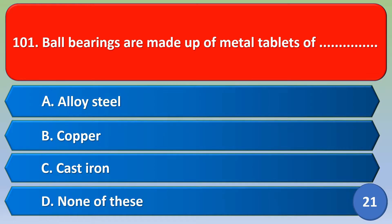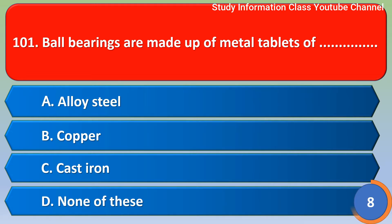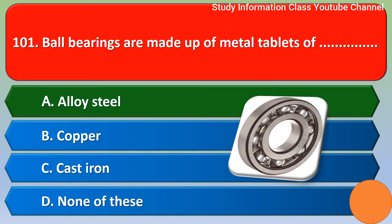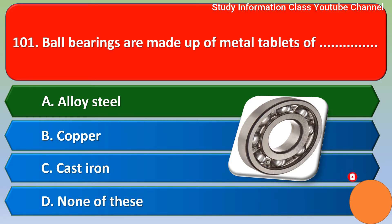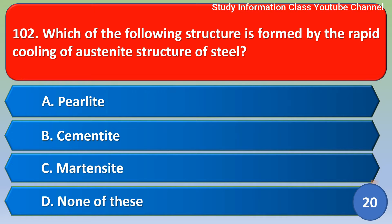Namaste. Sri Rama. Ball bearings are made up of metal — option A: alloy steel, option B: copper, option C: cast iron, option D: none of these. The correct answer is option A, alloy steel. Ball bearings are made up of alloy steel.